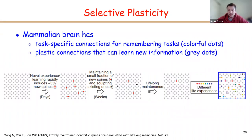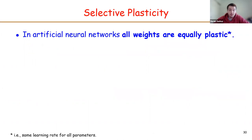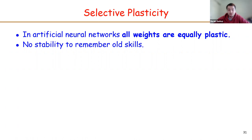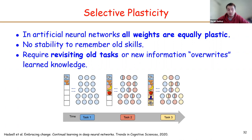To sum up, in the brain we have task-specific stable connections for remembering tasks, shown as colorful dots, while we also have plastic connections that can learn new information, indicated by gray dots. In contrast, in artificial neural networks, all weights are equally plastic — we apply the same learning rate to all parameters. That's why there is no stability to remember previously seen tasks, and deep learning models require revisiting old tasks frequently. Otherwise, they forget because new information overwrites learned knowledge. This is the catastrophic forgetting problem.